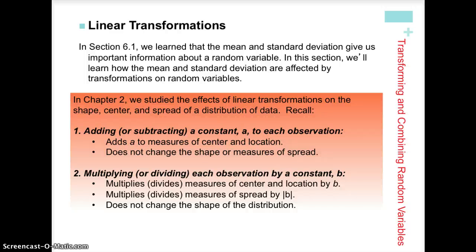Measures like standard deviation, range, and IQR will not change. When we multiply or divide a random variable by a constant B, we're multiplying every single number in the distribution by that constant. That means it will change not only the measures of center, but also the measures of spread. The shape will be the same, but it may be stretched out or squished together.